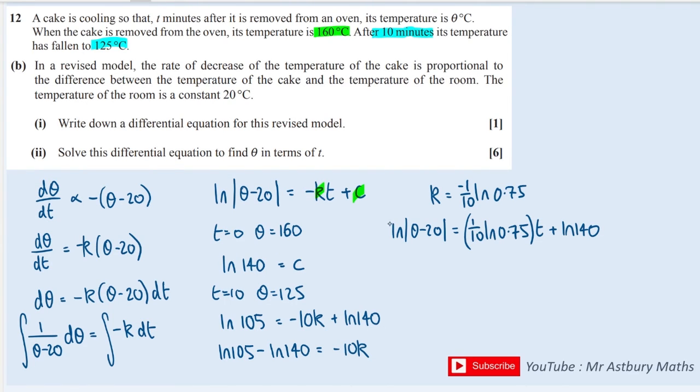I can then make e the base of both sides, and that will give me θ - 20 = e^(1/10 × ln(0.75) × t + ln(140)). Now I've got two powers here added together, so that's the same as writing this as e^(1/10 × ln(0.75) × t) × e^(ln(140)).